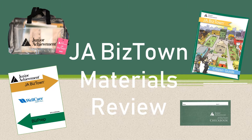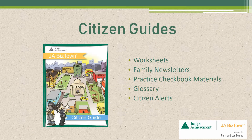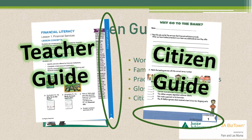Now that we have completed the teacher guide overview, let's review all of the other materials you have received. This will be a great time to take out all of your materials and follow along. First, you have the student workbooks, which are referred to as citizen guides. Once students complete the citizen pledge, they will be referred to as citizens. Citizen guides are provided for each student and contain worksheets used in combination with each of the units, family newsletters for each unit to take home, practice checkbook materials, a glossary of all vocabulary words, and citizen alerts which help them form a link between learning and real-world activities. Please be aware, the color in the teacher guide and citizen guide will correspond with each other in each unit, so you will be able to spot if a student is in the correct unit throughout the lessons.